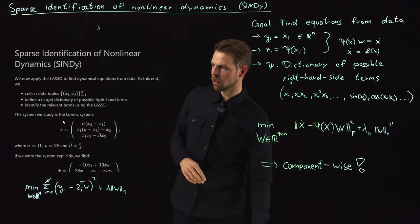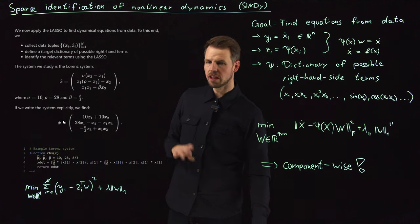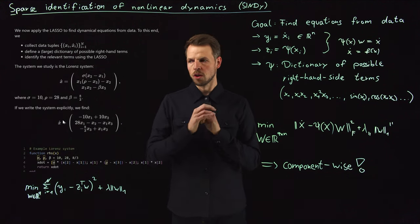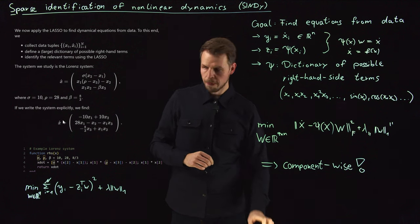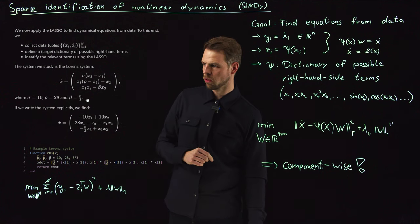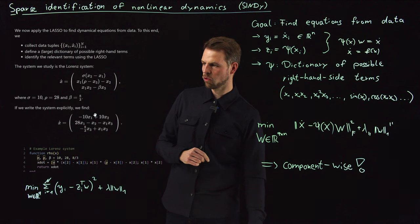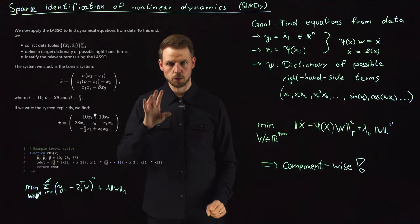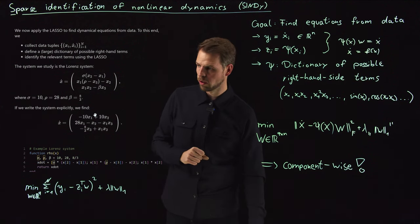This is really what the code is about, and we are going to study the Lorenz system, a very classical, ordinary differential equation, non-linear. So here it is, three components, and I've used these standard parameters that give rise to chaotic behavior. If you insert the parameters directly, you will find this minus 10x1 plus 10x2. We should remember these numbers, because we will hopefully find them in our regression problem.